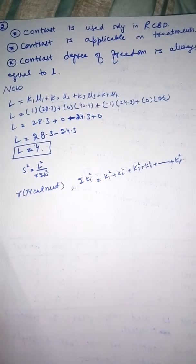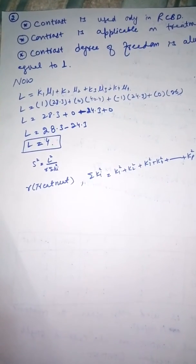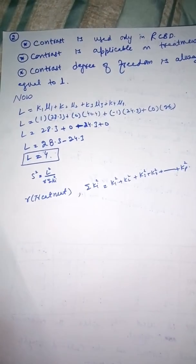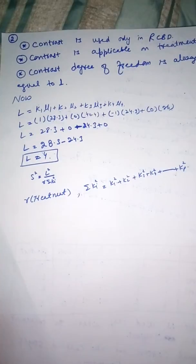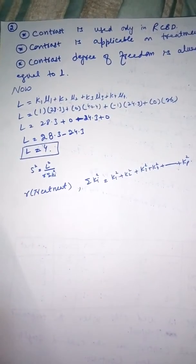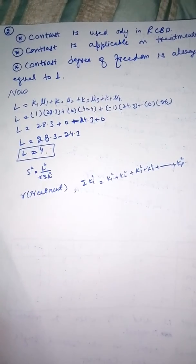Contrast degrees of freedom is always equal to 1. This is an important concept before studying the contrast - the degree of freedom is based on the treatment.